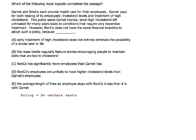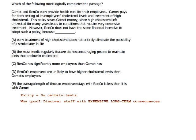Why does the policy help? It discovers stuff up front — it finds conditions that lead to very expensive treatment if left untreated. So maybe you can discover stuff with expensive long-term consequences. That's what it does. So this saves Garnet money, but it wouldn't save Renco money.